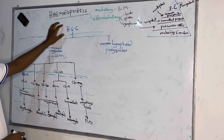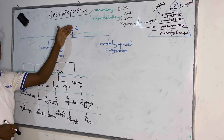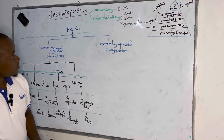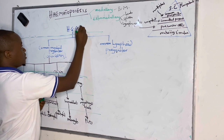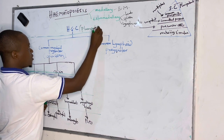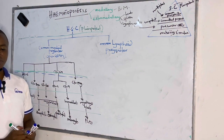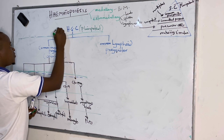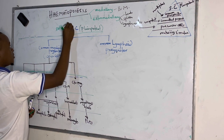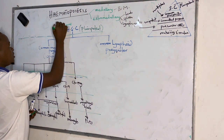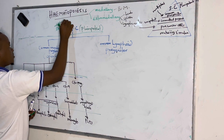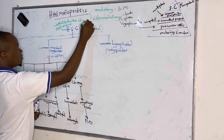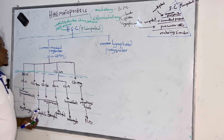Hematopoiesis involves the hematopoietic stem cell. This hematopoietic stem cell you can call pluripotent — or prepotent — because it can develop into any type of cell. It has, first of all, the ability of cell renewal, and it has the ability to develop into any cell line. That is why we call it prepotent.